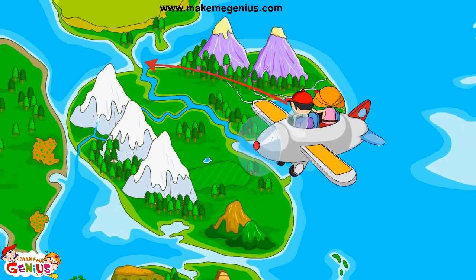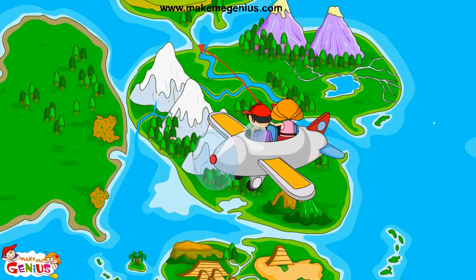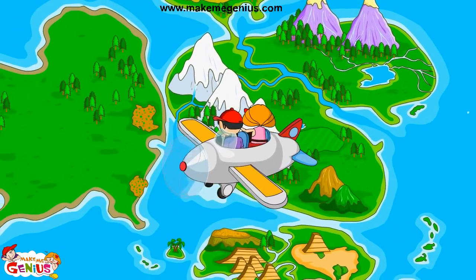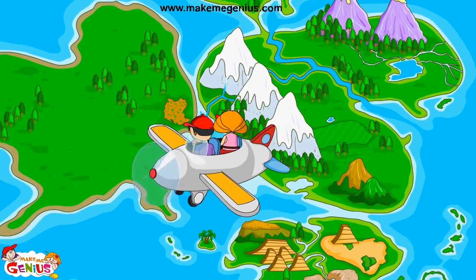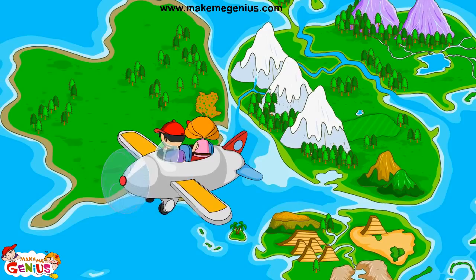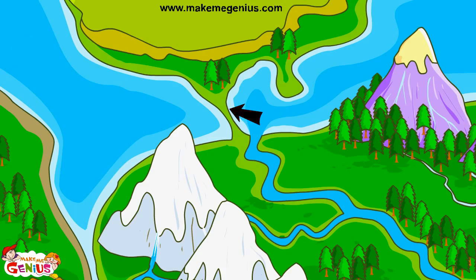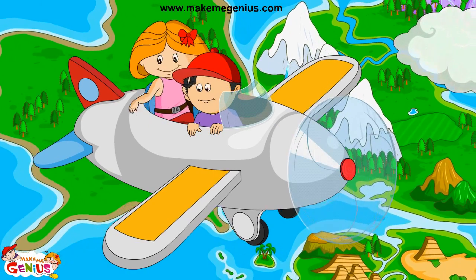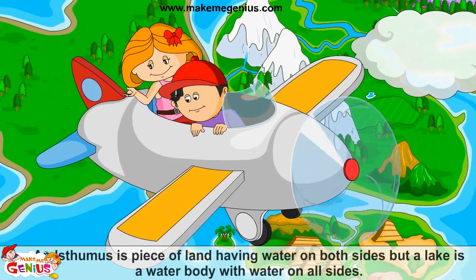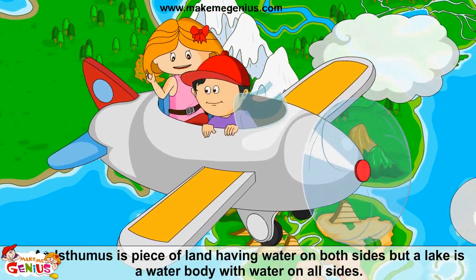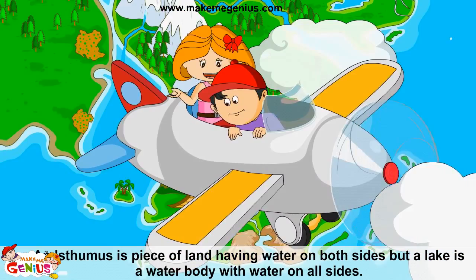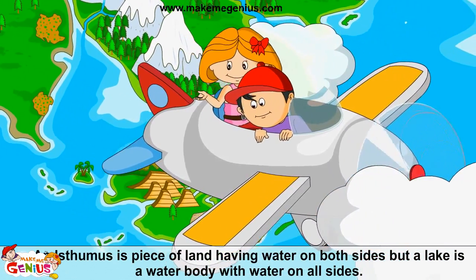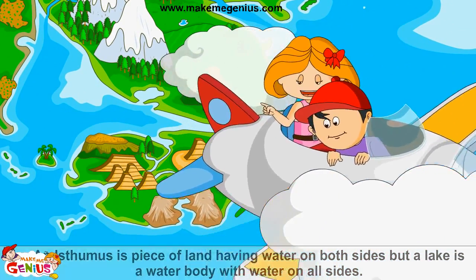It is an isthmus. An isthmus is a narrow strip of land connecting two large land masses. An isthmus has water on two sides. A river has water on all sides. But an isthmus has water on two sides. You are a genius. An isthmus is a piece of land having water on both sides. But a lake is a water body with water on all sides.